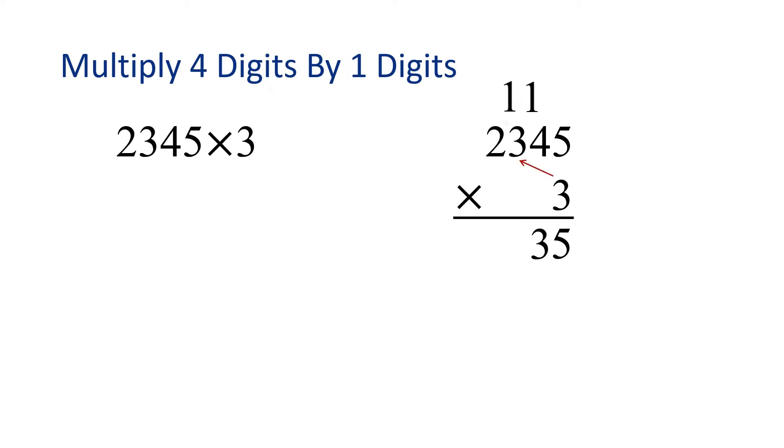Now we'll multiply 3 times 3 and add the 1. 3 times 3 is 9 plus 1 is 10. Once again, carry the 1. Now we'll multiply 3 times 2 and add 1. 3 times 2 is 6 plus 1 is 7. The product of 2345 and 3 is 7035.